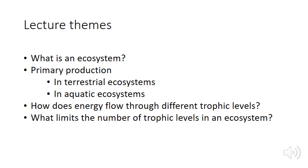We're going to talk about primary production in terrestrial ecosystems and in aquatic ecosystems, and what factors might limit primary production in either case. Finally, we'll talk about trophic levels, how energy flows through them, and what factors limit the number of trophic levels that can occur in an ecosystem.